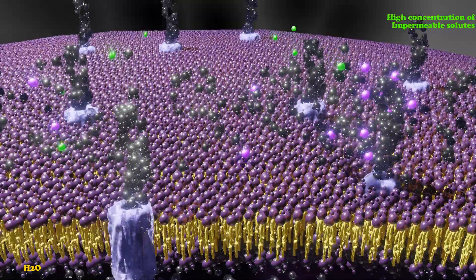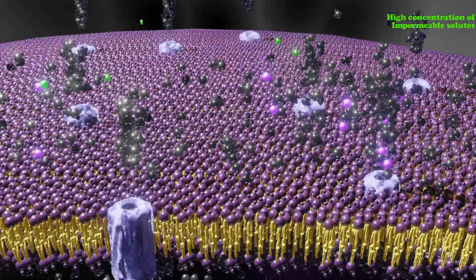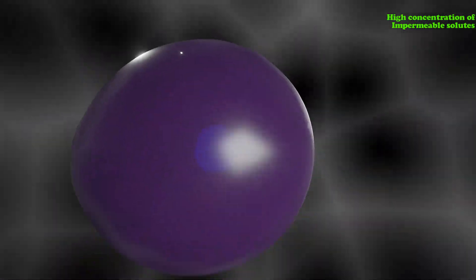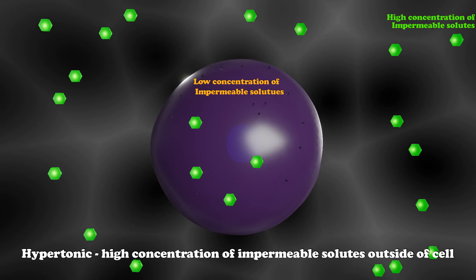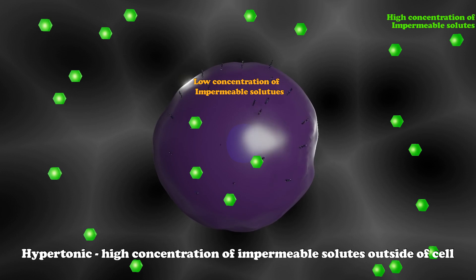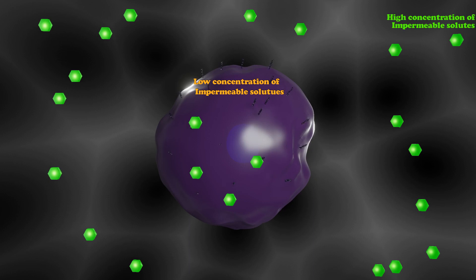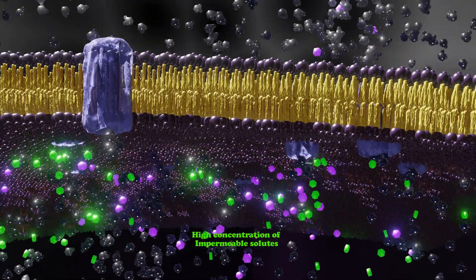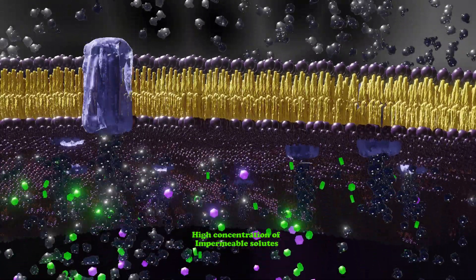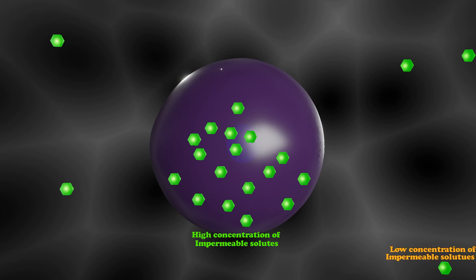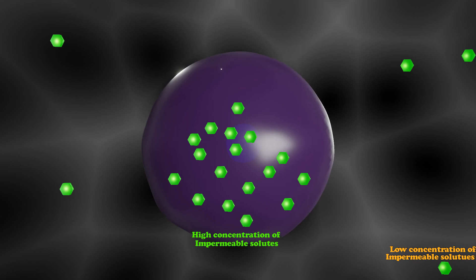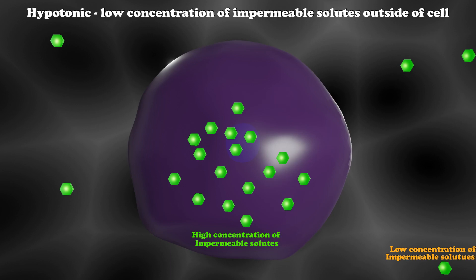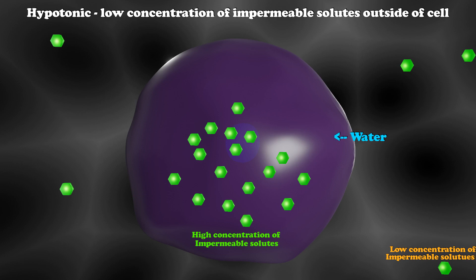The extracellular fluid — the fluid outside the cell — we would call hypertonic. If we have a low concentration of impermeable solutes on the inside and a high concentration on the outside, water travels in that direction and the cell can actually shrink and crenate. Conversely, if we have a high concentration of impermeable solutes on the inside of the cell, water travels inward. A cell inside a hypotonic solution — meaning low concentration on the outside — will have water flow in, causing the cell to swell and potentially burst, which is called lysis.